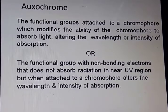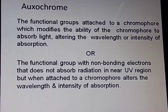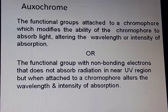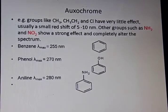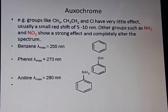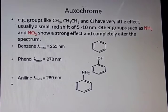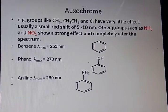Oxochromes are the functional group attached to a chromophore which modifies the ability of the chromophore to absorb light, altering the wavelength or intensity of absorption. Examples of oxochromes are methyl, ethyl and chloro group, but they have very little effect — usually a small rate shift of 5 to 10 nm.